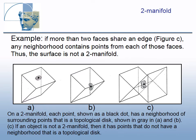In the example of figure C, more than two faces share an edge. Any neighborhood of the edge point contains points from each of those faces. Such a neighborhood is not a topological disk. Thus, the surface is not a two-manifold.